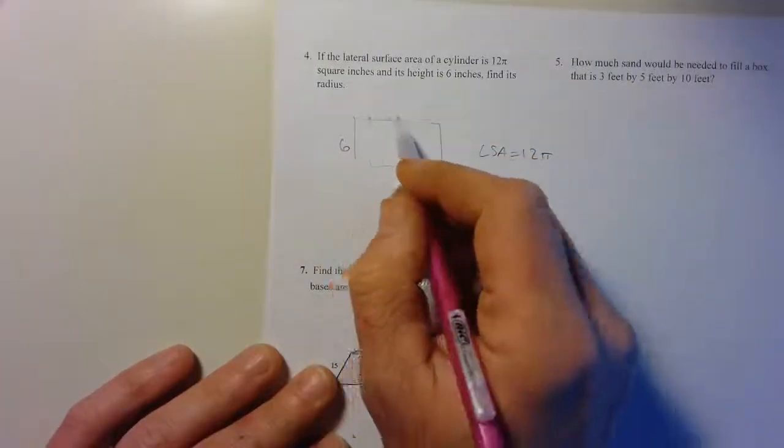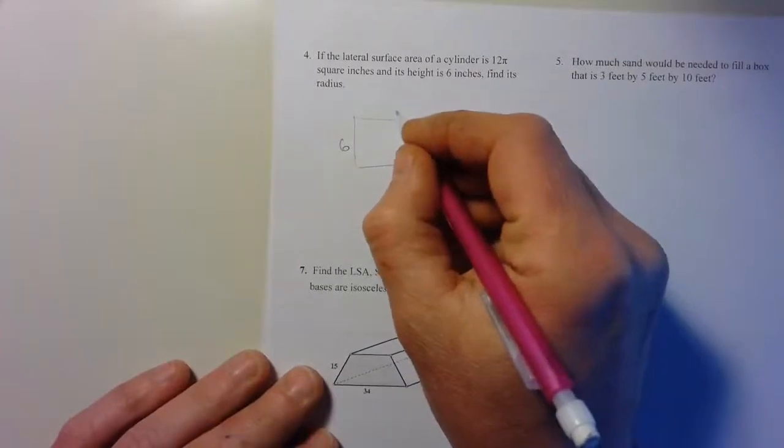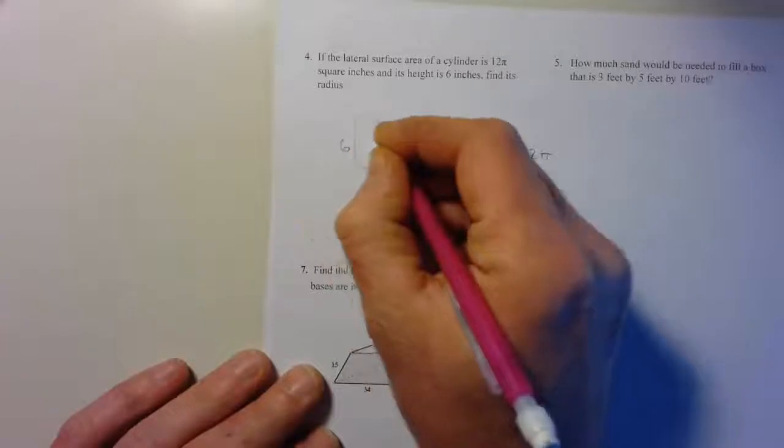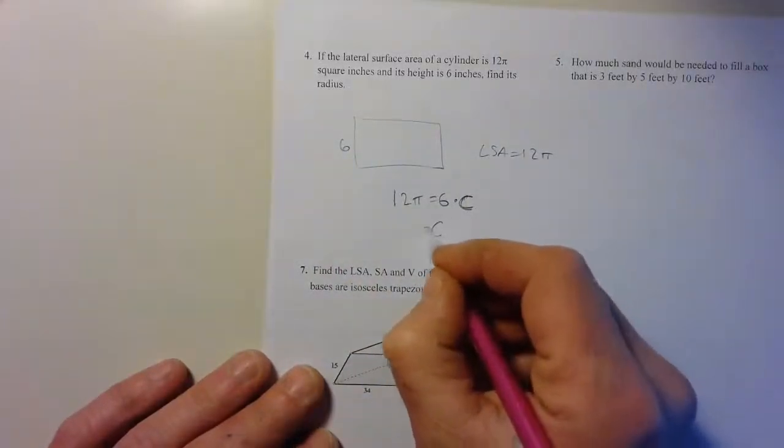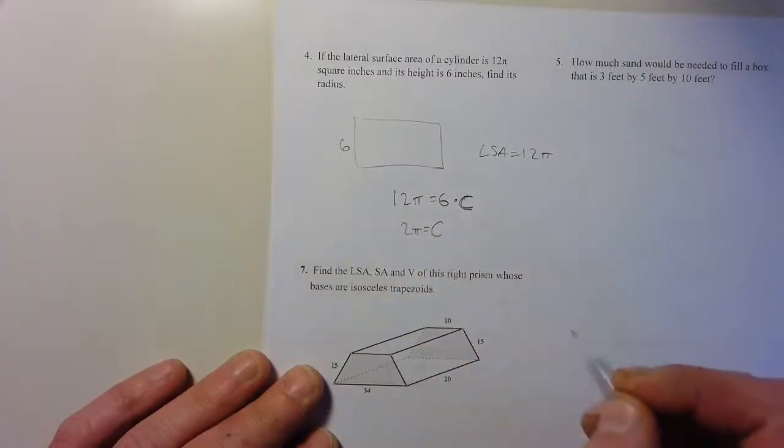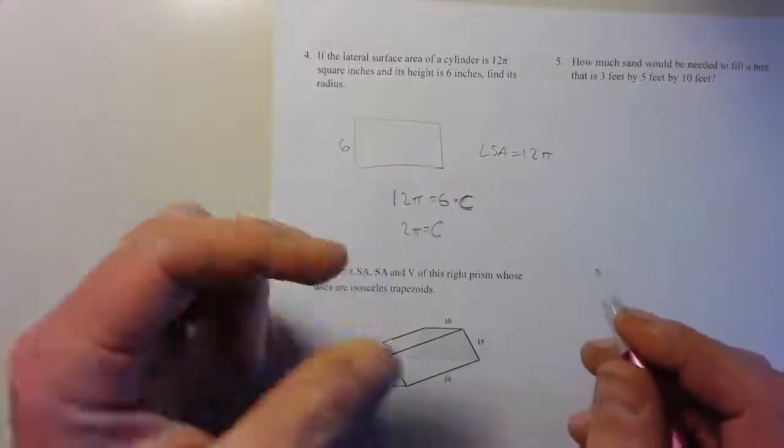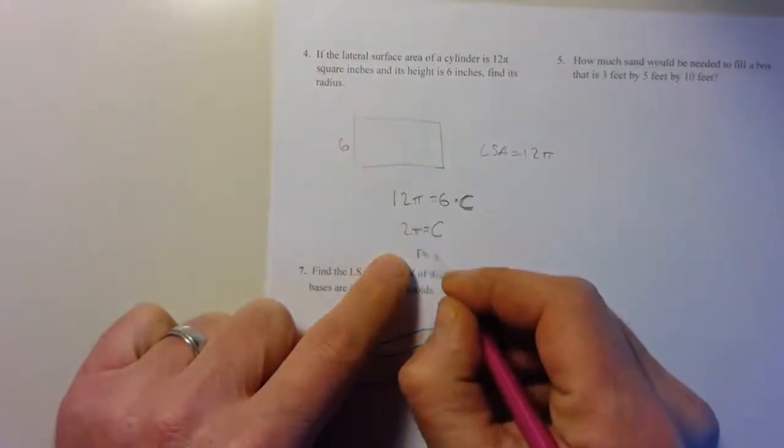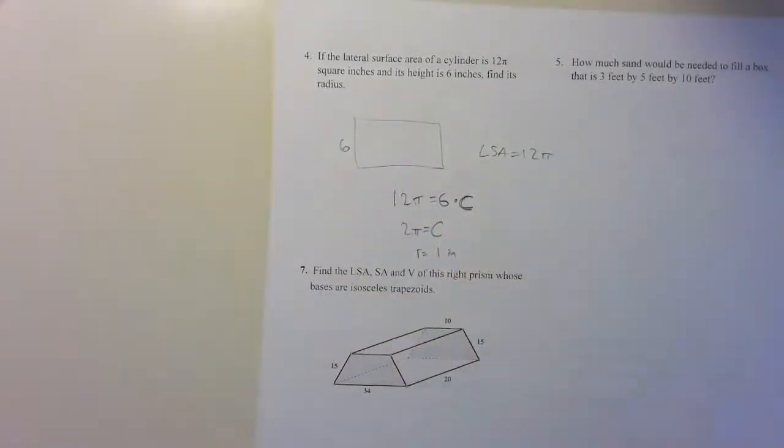Keep in mind that LSA is the 6 times whatever that is. Remember that's the circumference that wraps around it. Circumference is 2πr. So this has to be 2π that wraps all the way around. The circumference is 2π, so my radius then must be 1 inch.